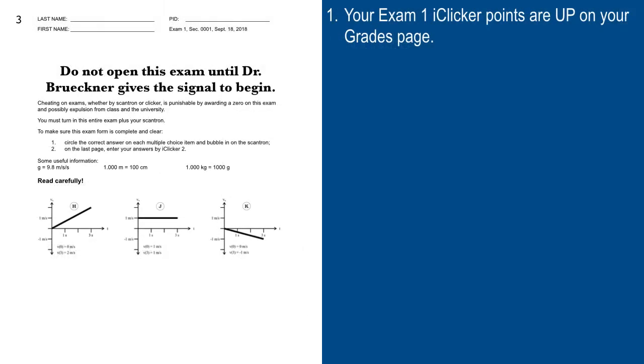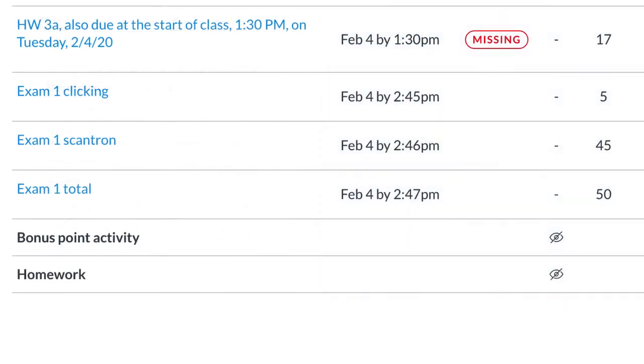Your exam one iClicker points are already up. I did those last night. You'll have three scores for exam one: exam one clicking, exam one Scantron, and you know what that is now—the raw score in your printout. The sum of those two is your exam one total. They're not all put together yet because we had a couple people with Scantron mess-ups, and the data doesn't come through, so we've got to put that in by hand.